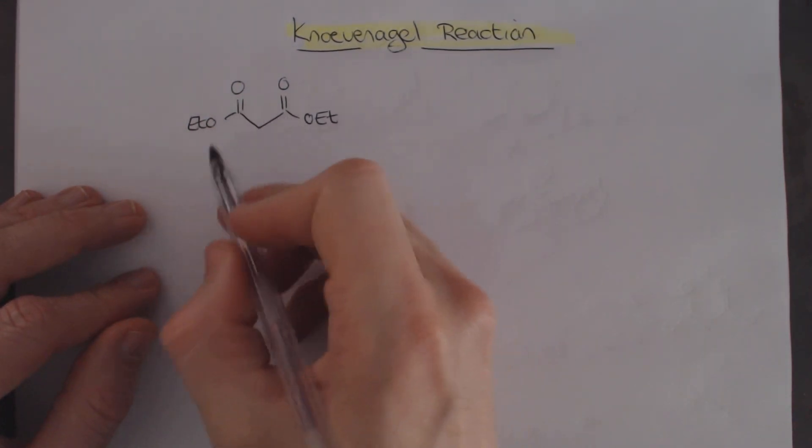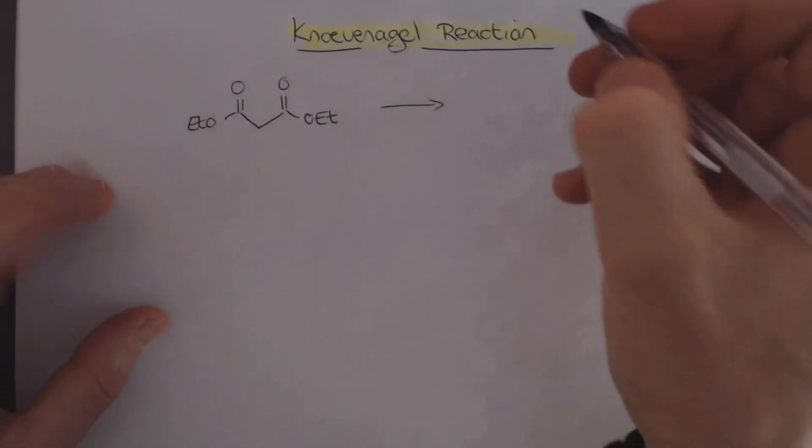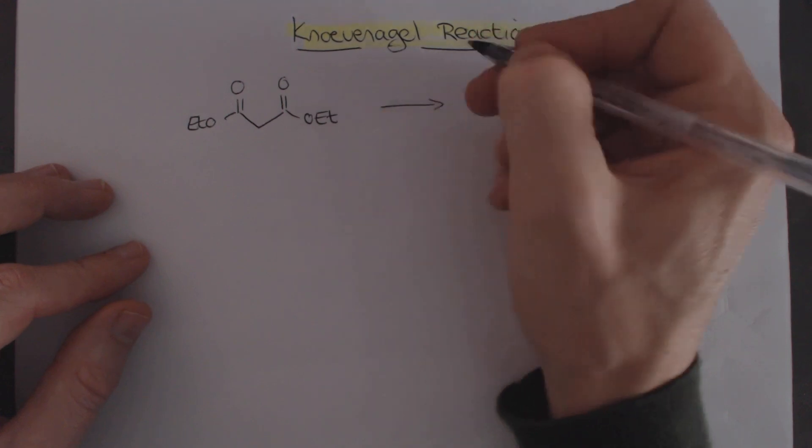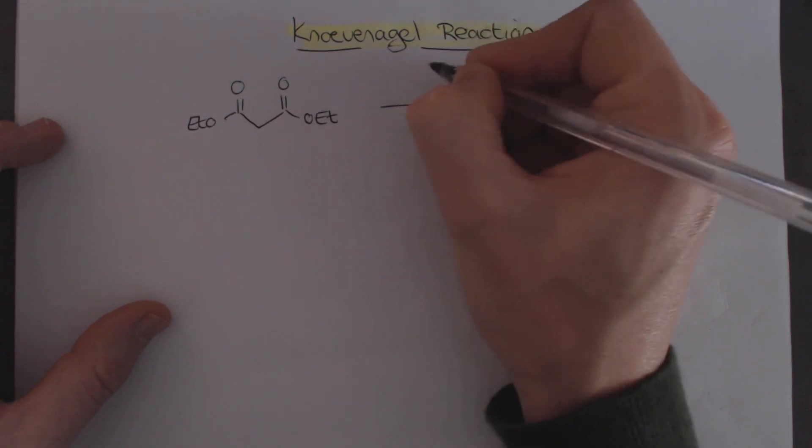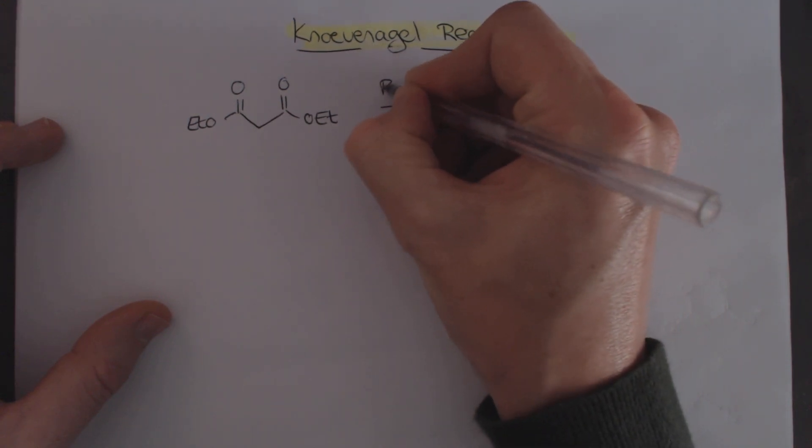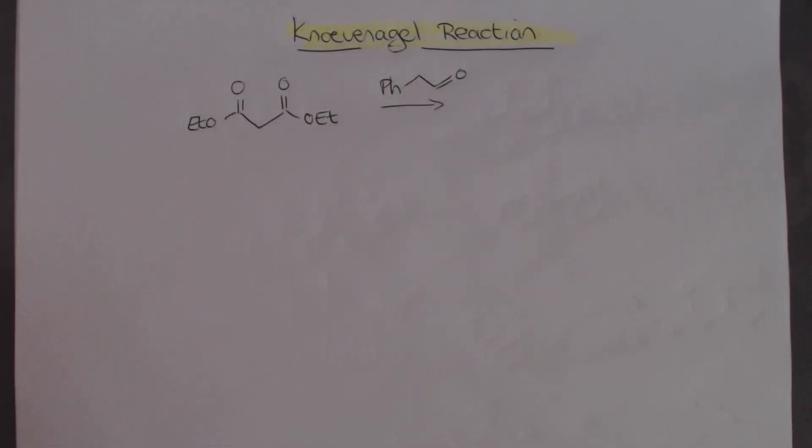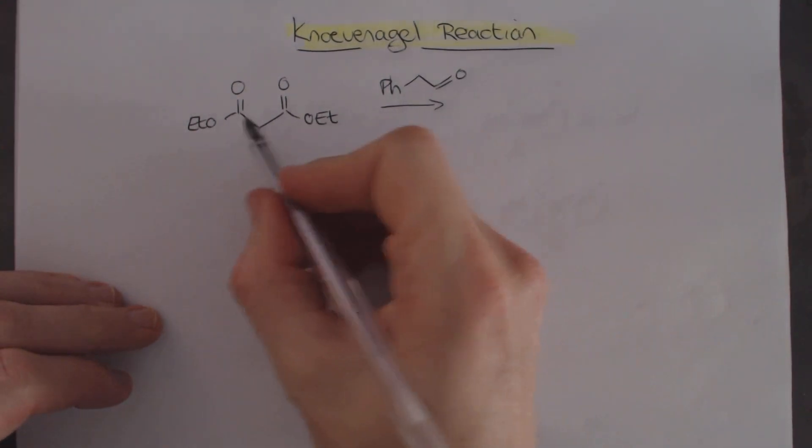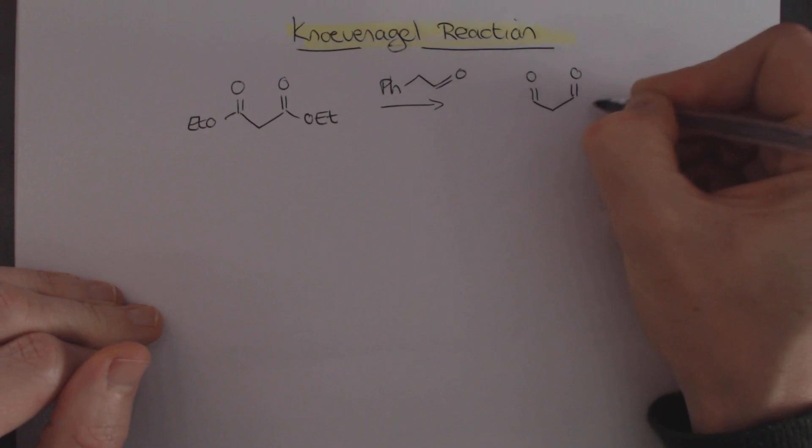But what we see is it's a 1,3-dicarbonyl compound and in the presence of an aldehyde. And in this case what we're going to see is what's actually rather cool about this reaction is that we can use an enolizable aldehyde. So I'll just take some random enolizable aldehyde, this is really enolizable.